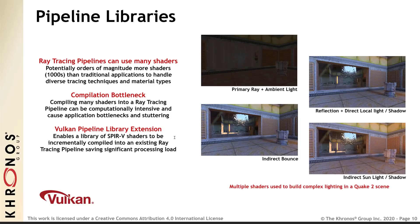Ray tracing pipelines can use many shaders — potentially orders of magnitude more than traditional applications — to handle diverse tracing techniques and material types. Compiling many shaders into a ray tracing pipeline can be computationally intensive and cause application bottlenecks and stuttering. The Vulkan pipeline library extension enables a library of SPIR-V shaders to be incrementally compiled into an existing ray tracing pipeline, saving significant processing load.